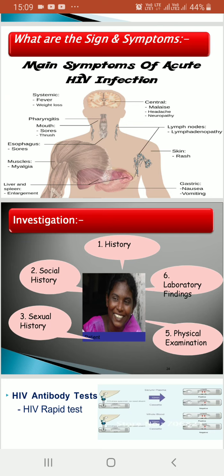Signs and symptoms mainly include fever, weight loss, malaise, headache, neuropathy, lymphadenopathy, skin rashes, mouth sores, thrush, esophageal sores in the food pipe, myalgia (pain in muscles), and enlargement of liver and spleen. Gastrointestinal symptoms like nausea and vomiting may also occur.